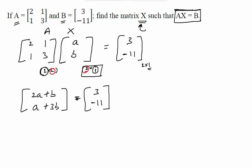Now if two matrices are equal this means that their corresponding elements are equal. This will give you two equations: 2A plus B equal to 3 and A plus 3B equal to minus 11.